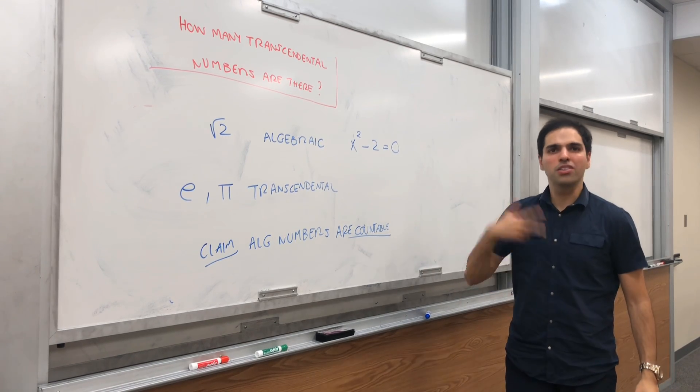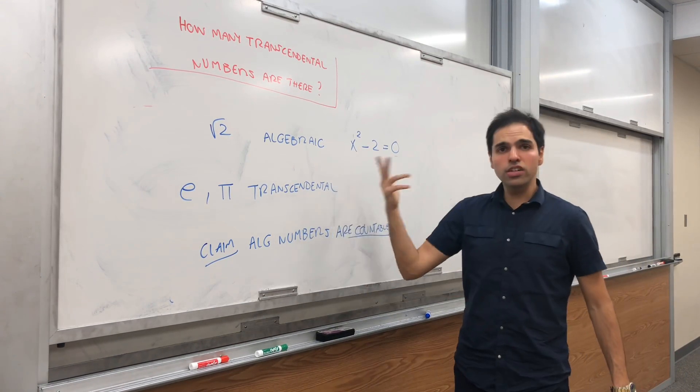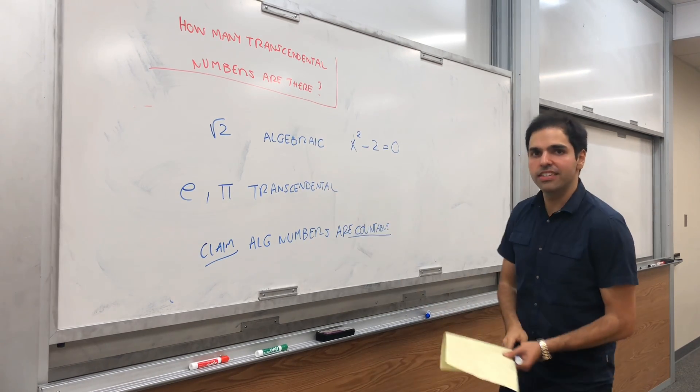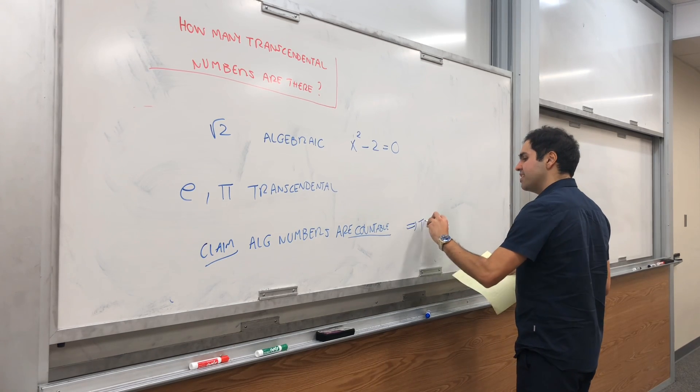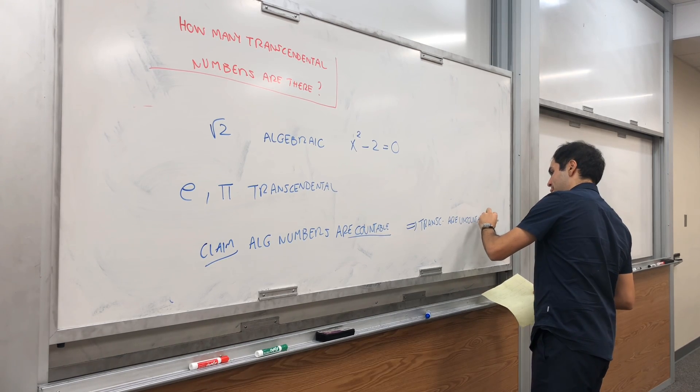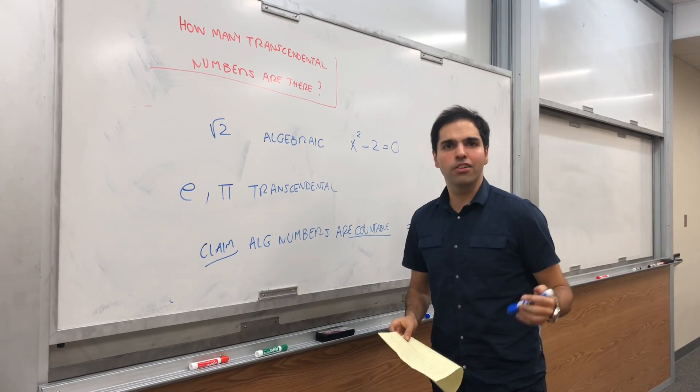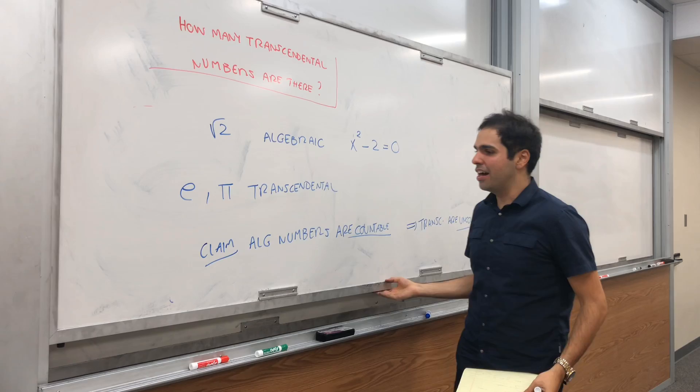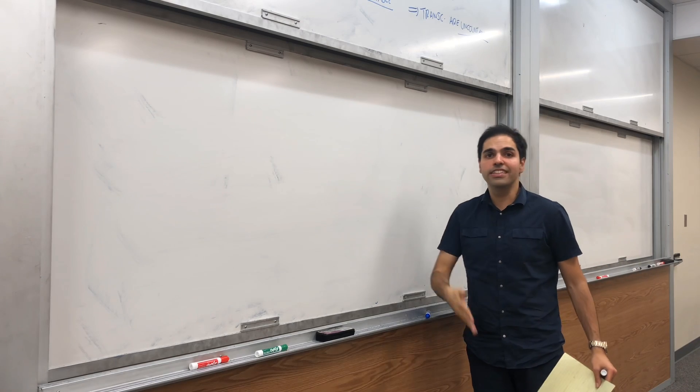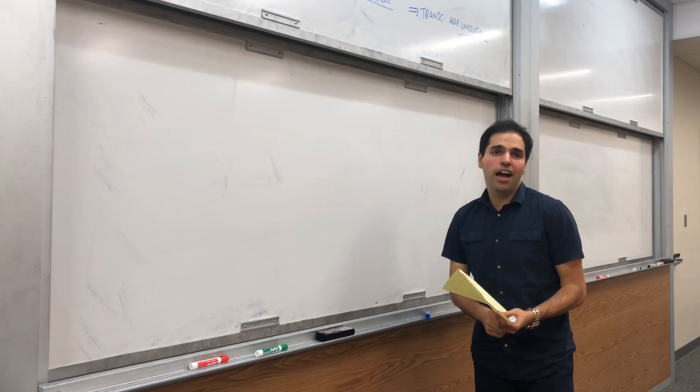They're just like the numbers 1, 2, 3, 4, 5, etc. You can count them. And because the real numbers are uncountable, and every real number is either algebraic or transcendental, this implies that the transcendental numbers are uncountable. Which means that there's so many of them, even if you had an infinite amount of time to count them, you wouldn't be able to do that. And that's why if you pick a real number at random, the chance that it's transcendental will be 1, because there's so many more transcendental numbers than algebraic numbers.